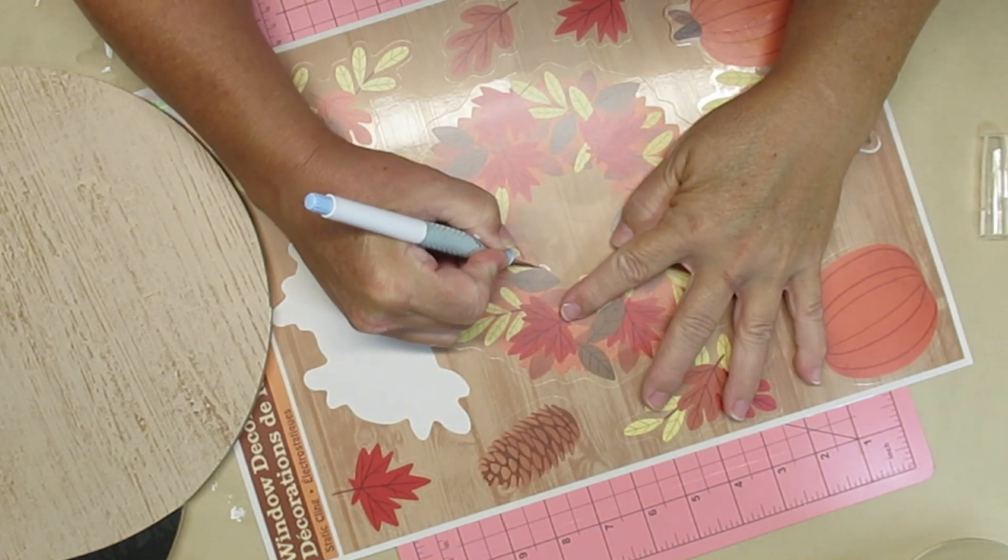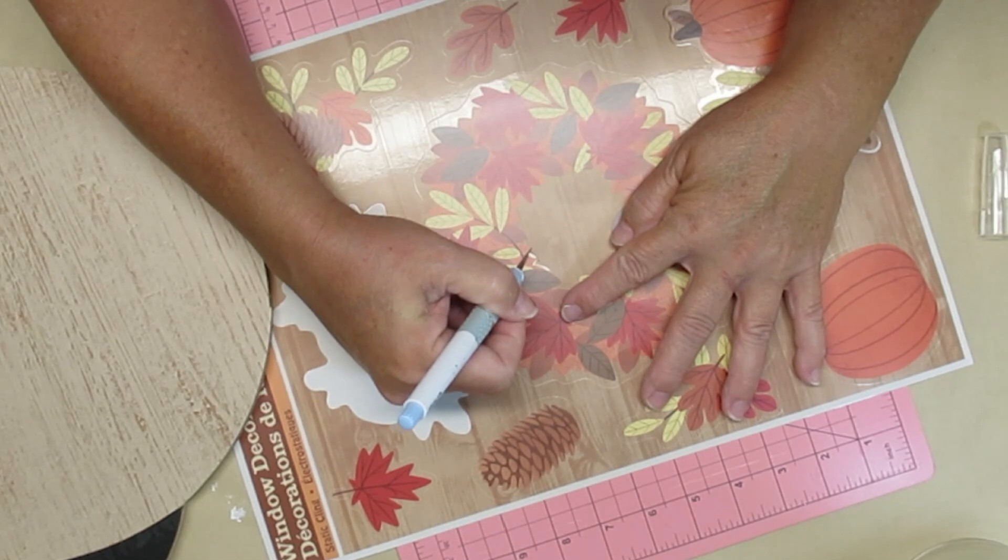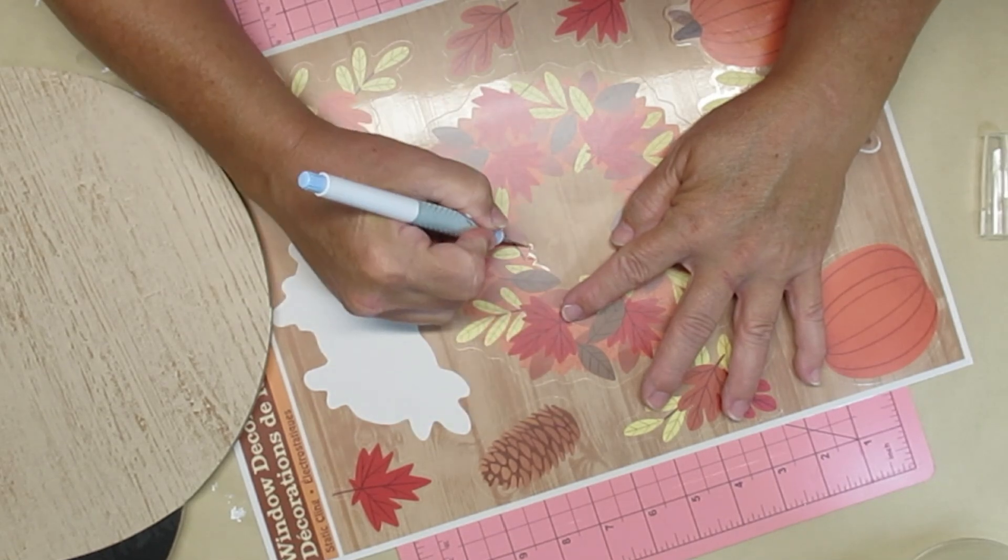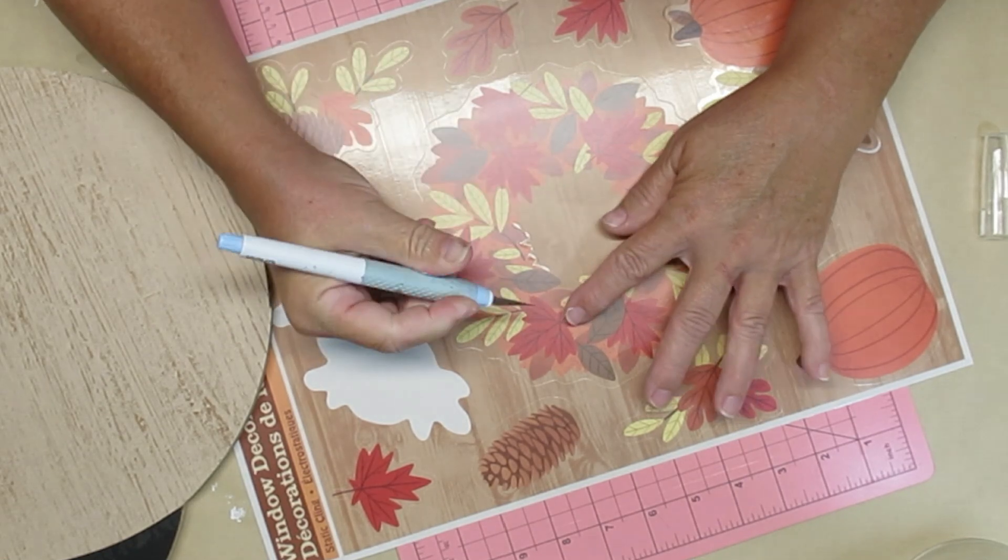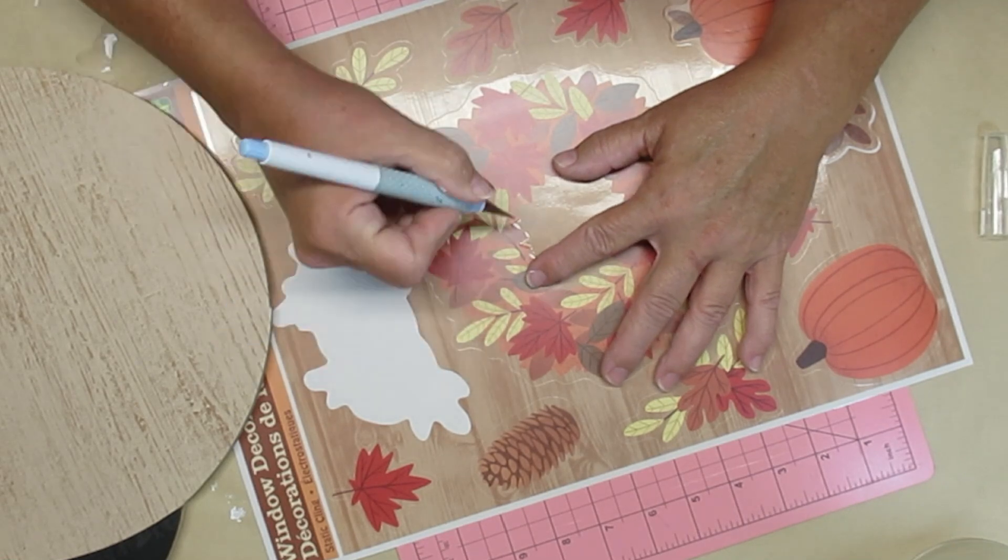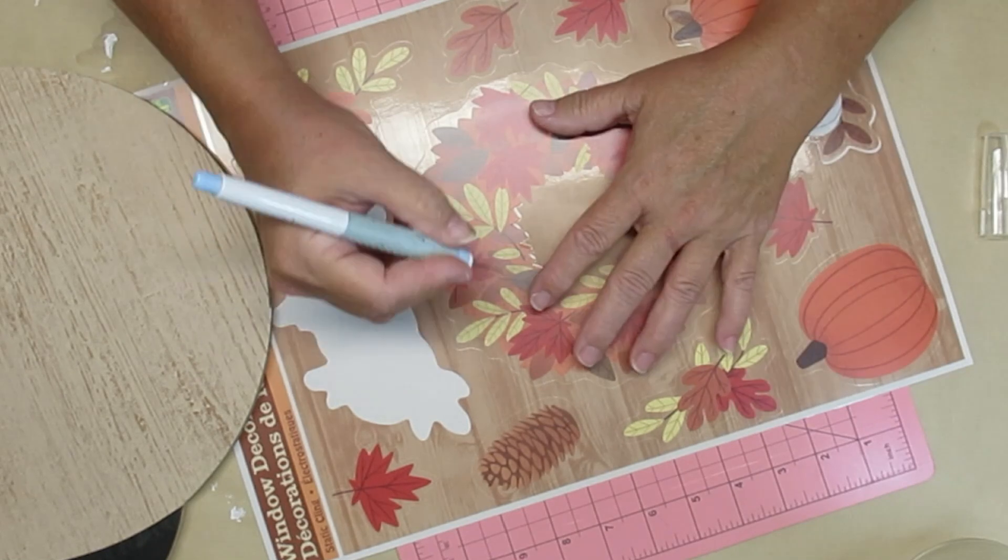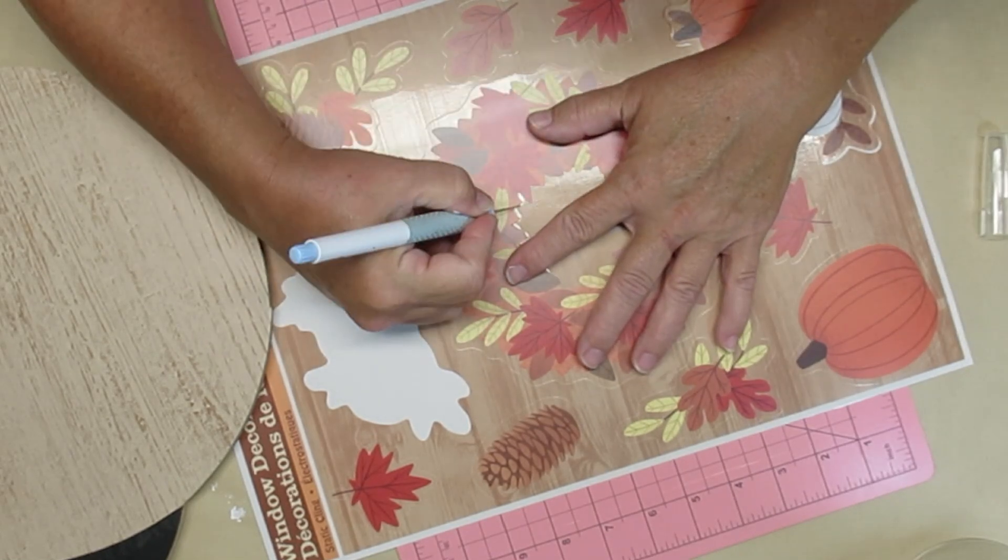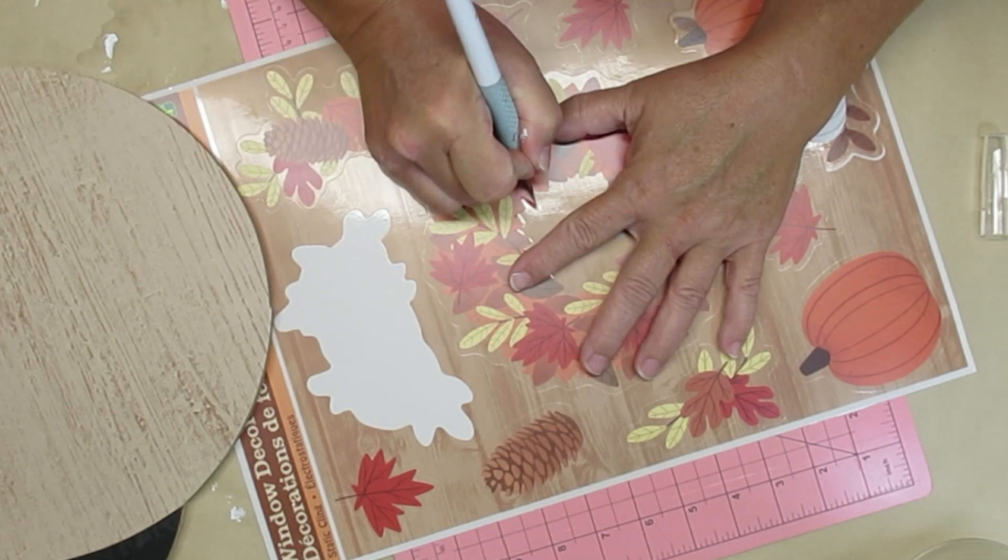I grabbed two different types of window clings from my local Dollarama store. They usually don't have a whole lot and unfortunately our Dollar Trees don't carry anything in regards to window clings or even stickers. But what I decided to do because this has sort of a brown background is I'm taking my craft knife and I'm going to literally cut out the inside of this little wreath and then I'm going to do the same thing around the outside.